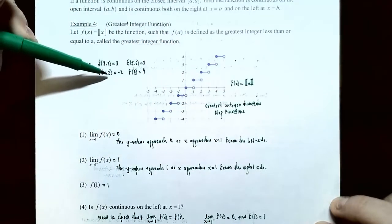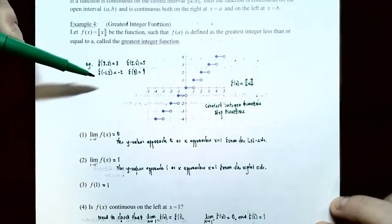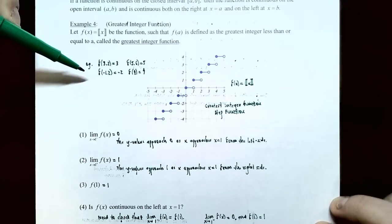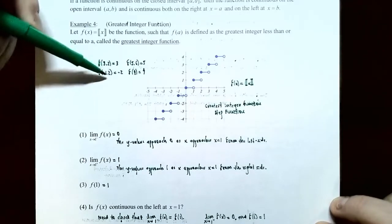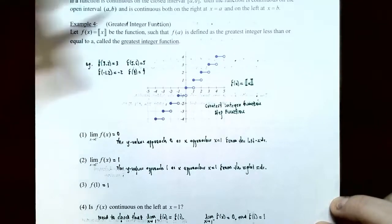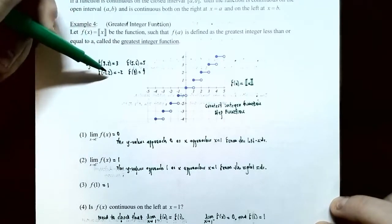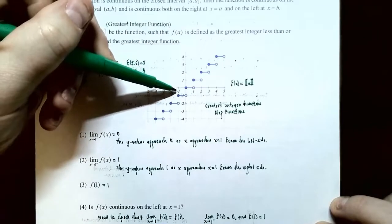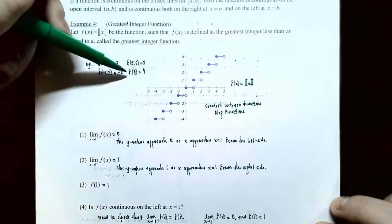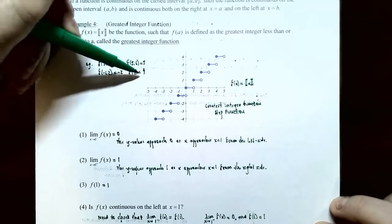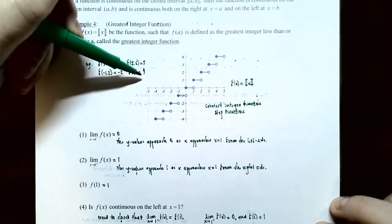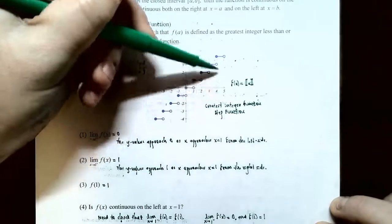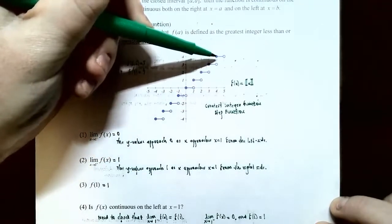For f(−1.2), you have to be careful with negative values. The greatest integer less than −1.2 is −2, not −1, because −1 is greater than −1.2. So the y value is −2. And if you plug in an integer like 4, f(4) equals 4 because 4 is already an integer — that's why there's a filled-in point at 4.